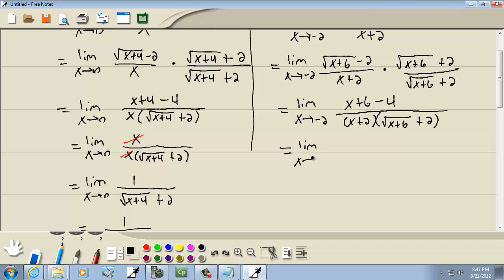So then that gives us limit as x goes to negative 2. 6 minus 4 is 2, so we've got x plus 2 over x plus 2 times the square root of x plus 6 plus 2. Now notice, here we have an x plus 2 times this, so that's going to cancel with the x plus 2 up on top. So we've got limit as x goes to negative 2 of 1 over the square root of x plus 6 plus 2.